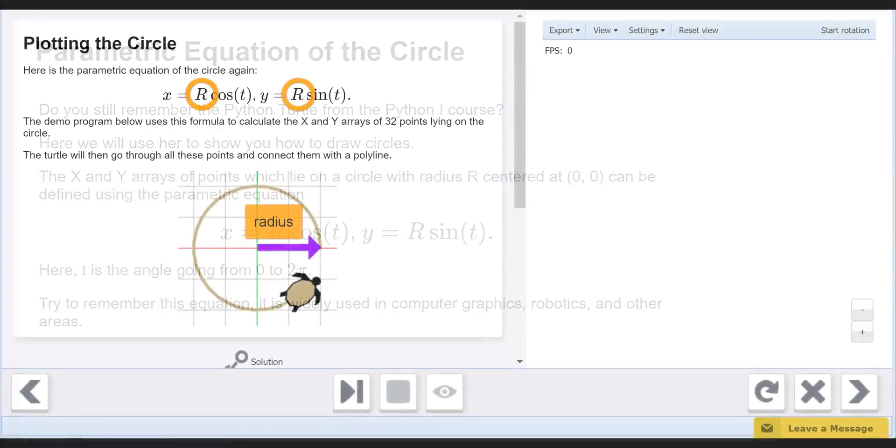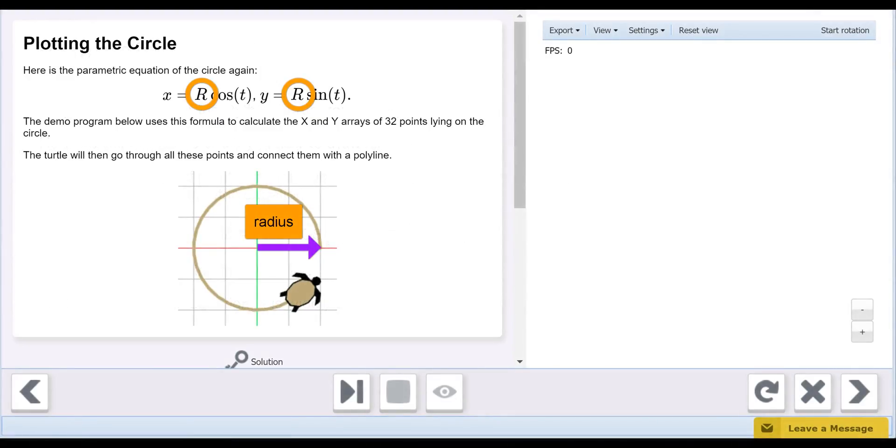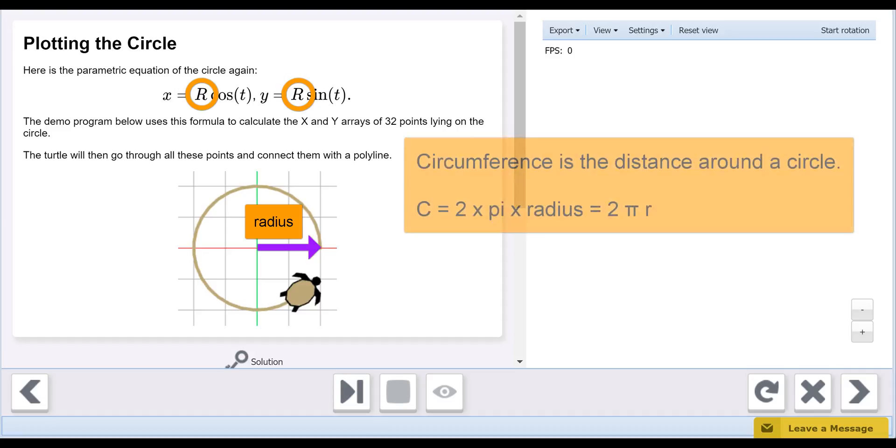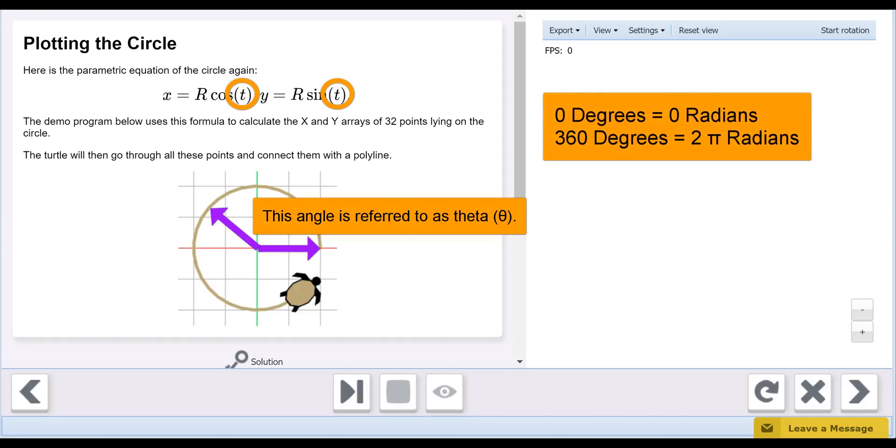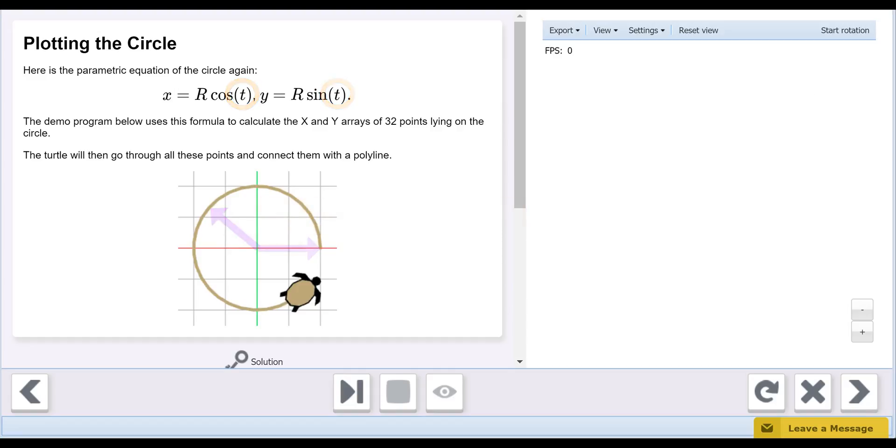In our parametric equations, R represents the radius of the circle. Remember that circumference is defined as 2 times pi times the radius. T, or theta, is the angle between the X axis as one radius and any other radius. T can have any value between 0 and 2 pi radians, or 360 degrees.